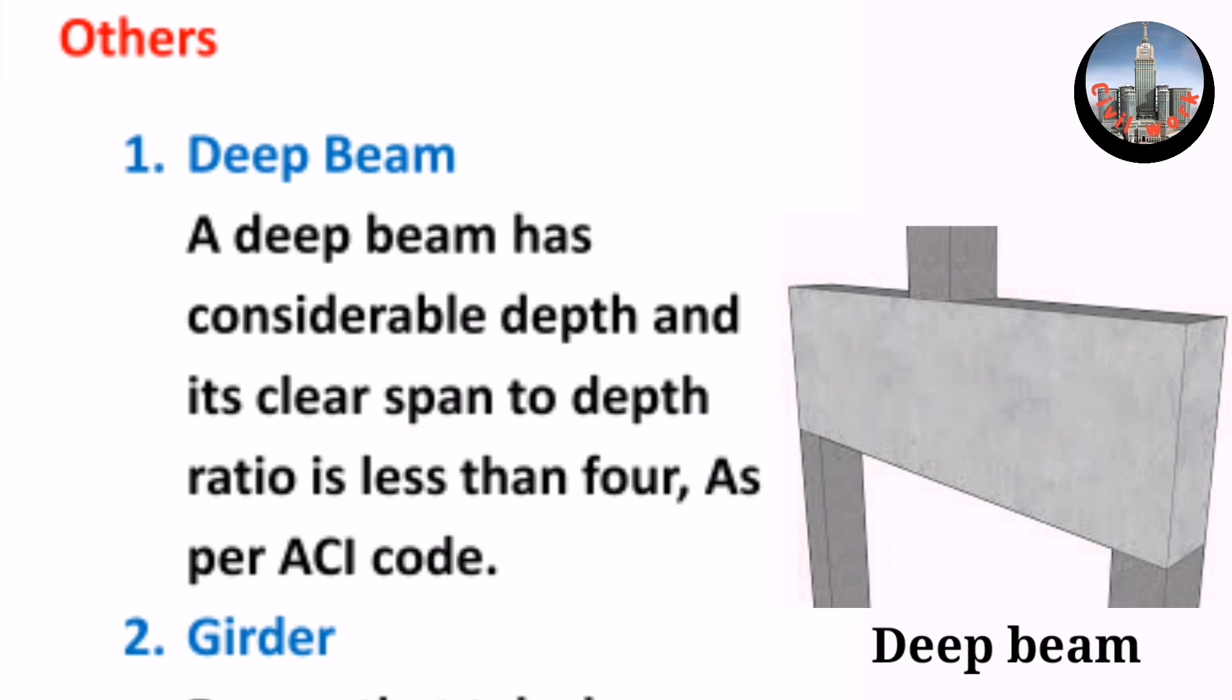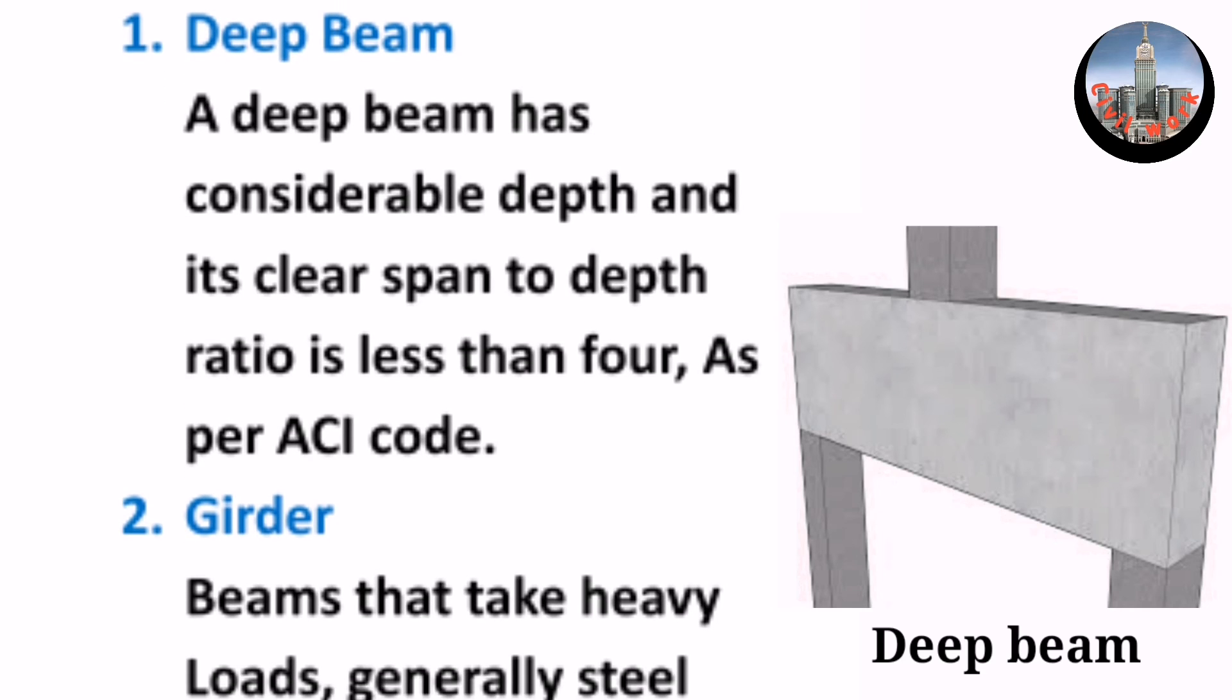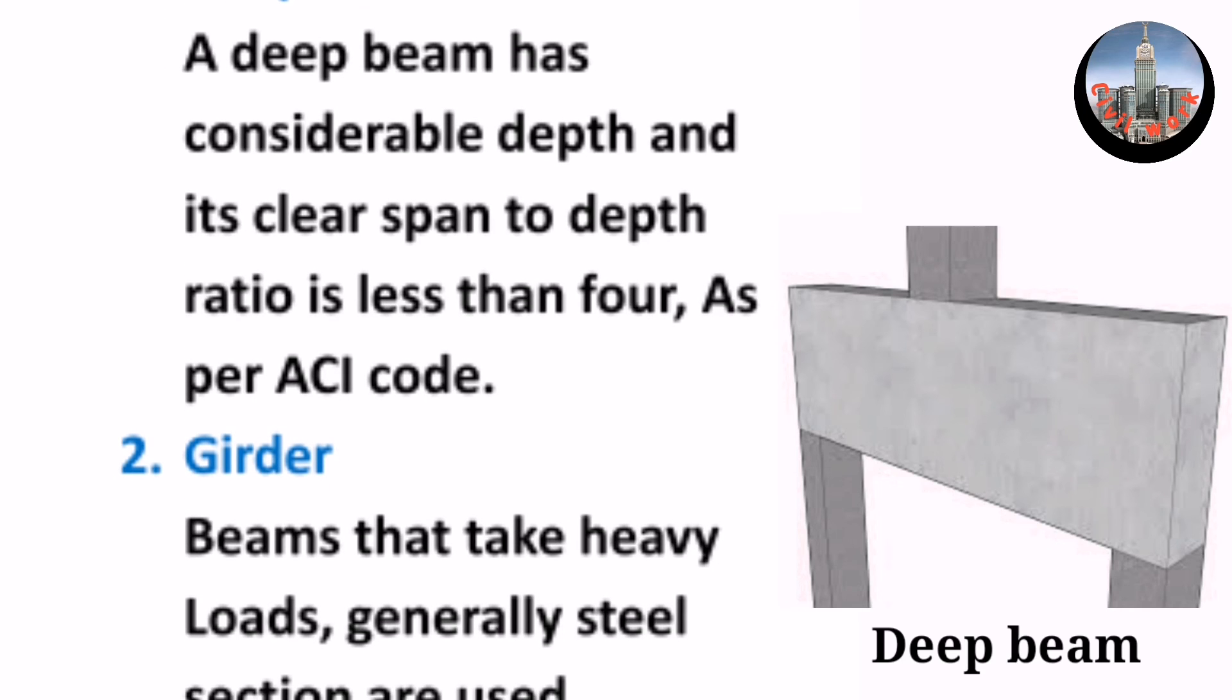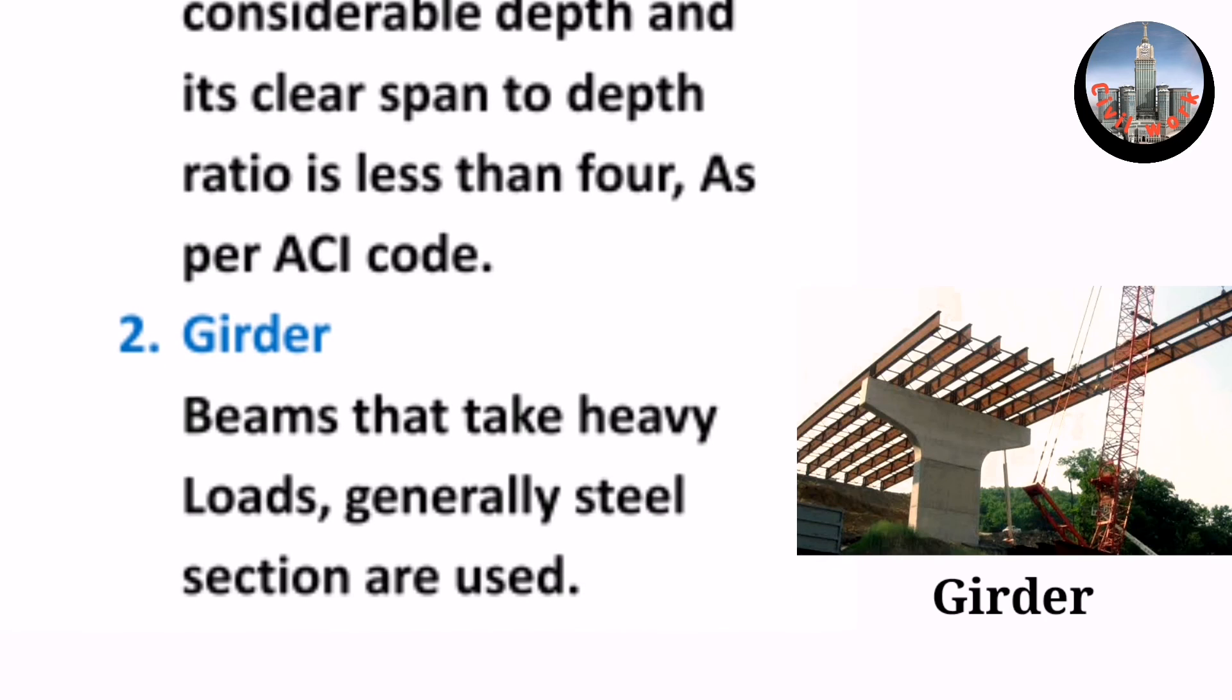Others: 1. Deep beam. A deep beam has considerable depth and its clear span to depth ratio is less than 4, as per ACI code. 2. Girder.